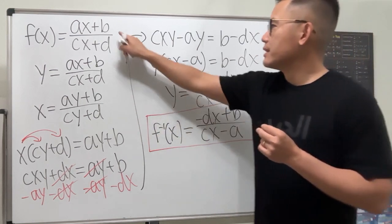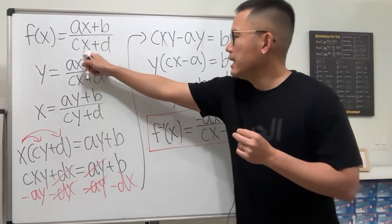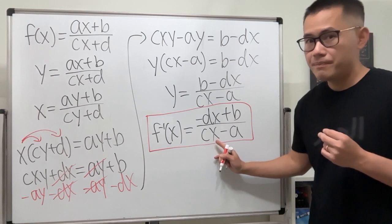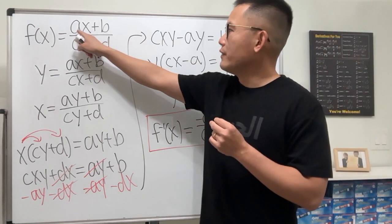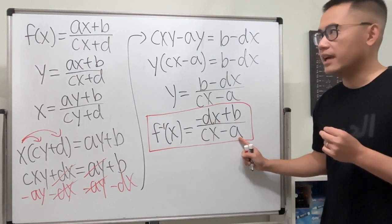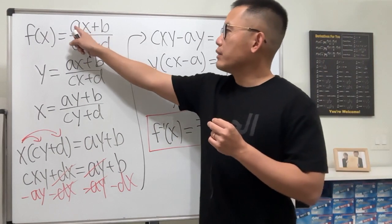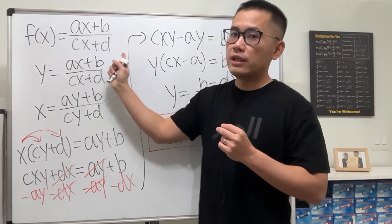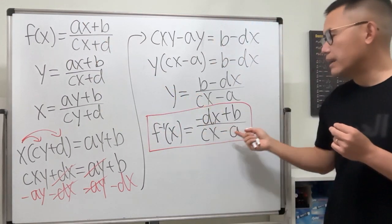So notice the b and b here, cx and cx, they stay. But originally, you have ax and then d. Right now, we have negative dx and then negative a. So you have to switch a and d, switch the numbers, and also make them negative.